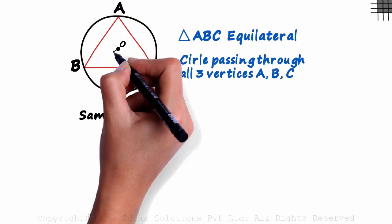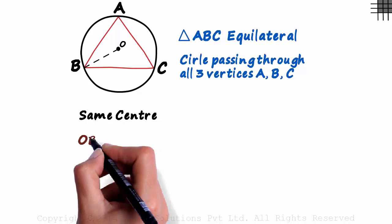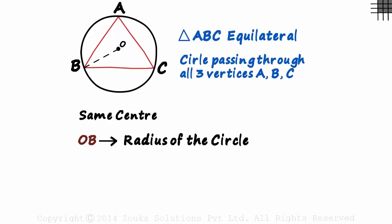Let's talk about OB. OB as we can see is the radius of the circle. Let's call it lowercase r. But there's something even more special about OB. It bisects angle ABC.